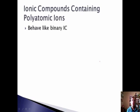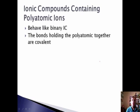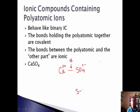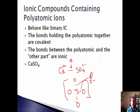Many ionic compounds contain polyatomic ions. These behave just like binary ionic compounds. The bonds holding the polyatomic together are covalent bonds, but the bond between the polyatomic and the other part — the cation or anion — is ionic. For CaSO4, Ca2+ is bonded ionically to SO4 2-. Within SO4, all the bonds are polar covalent bonds because they involve two non-metals of different identity. We want to treat the polyatomic ion just like any other anion.